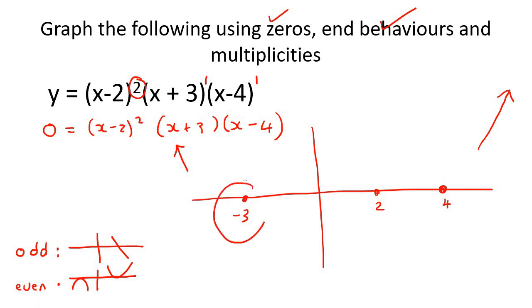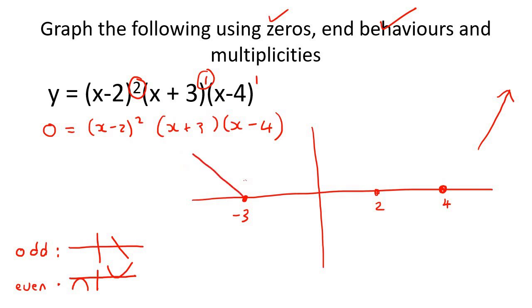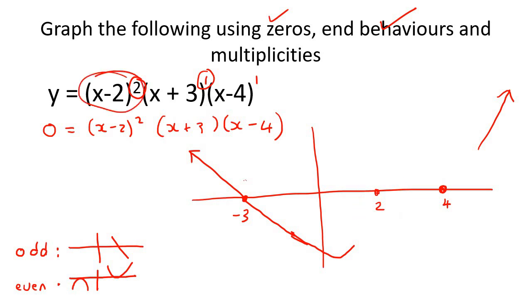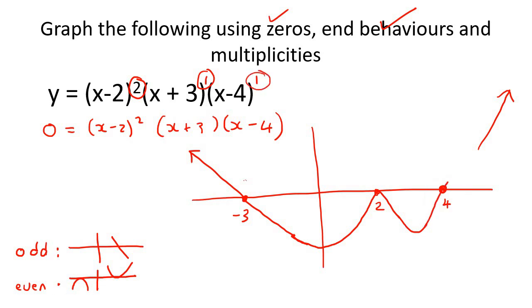At negative 3, the power is 1 — odd — so the graph goes right through. Then it turns somewhere because it has to go back up to the zero at x = 2. At x = 2, the power is 2 — even — so it turns rather than going through. Then it turns again to go through x = 4, which has an odd power, so it goes through. And so your graph would look something like that.